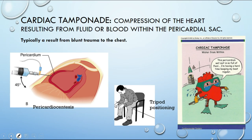Cardiac tamponade reappears here from the cardiac unit. It is the compression of the heart from fluid or blood within the pericardial sac, and can result from blunt chest trauma. These patients experience pain when lying flat, so place them in tripod positioning. The key intervention is to remove the fluid from around the heart via pericardiocentesis.